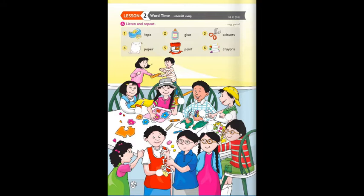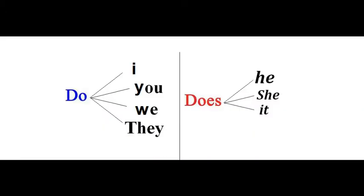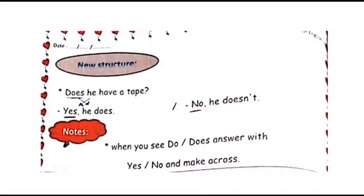Okay, now we'll talk about the grammar. We talked before about do or does. Does is for singular pronouns: he, she, it. Do is for I, you, we, they. Does takes he, she, or it.